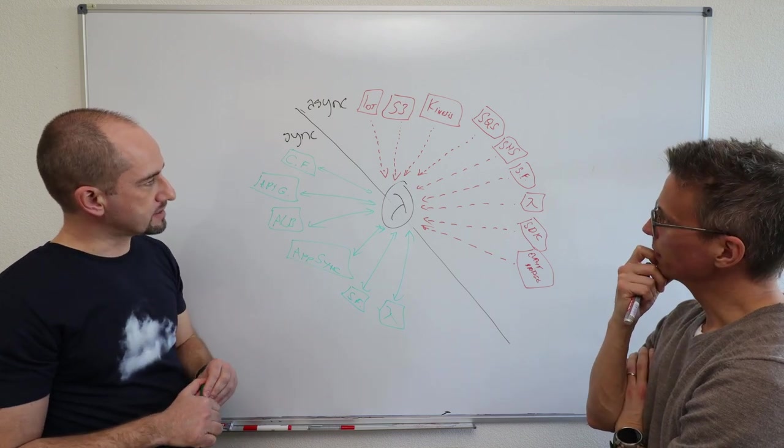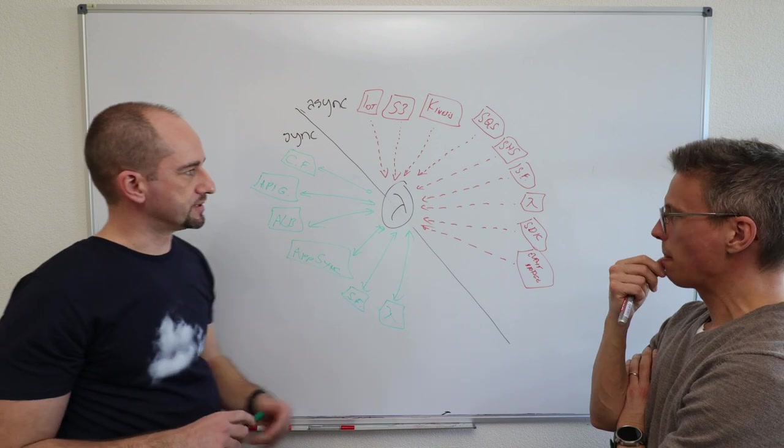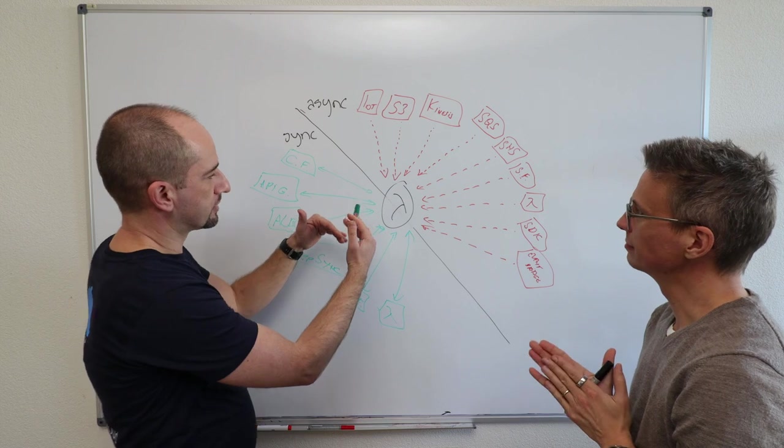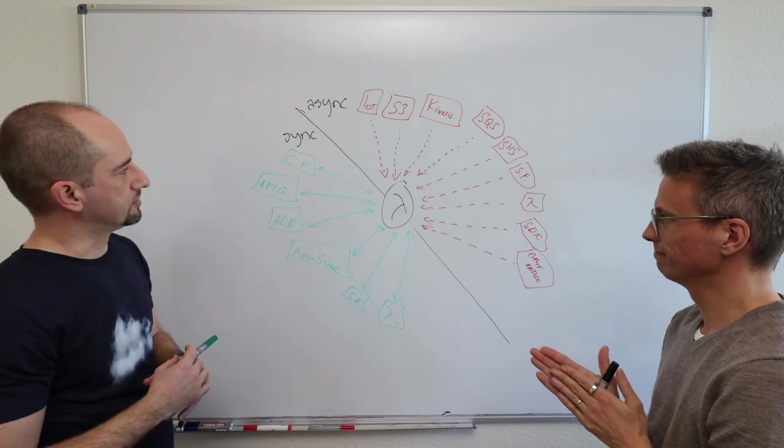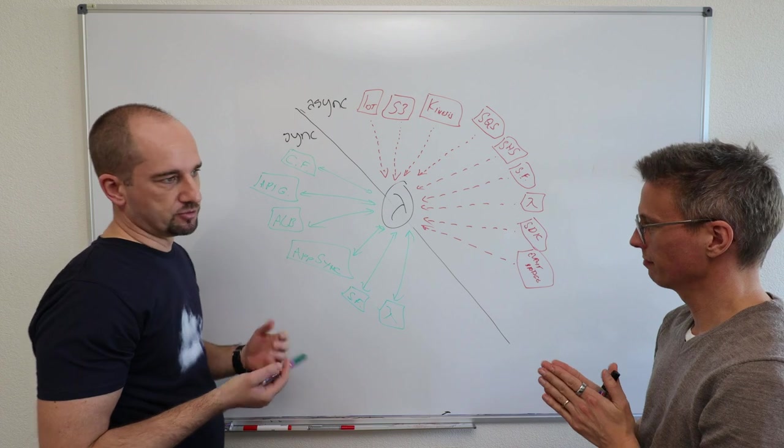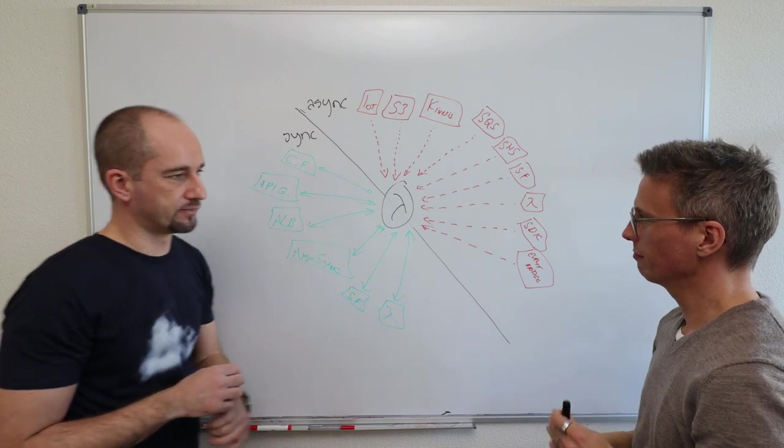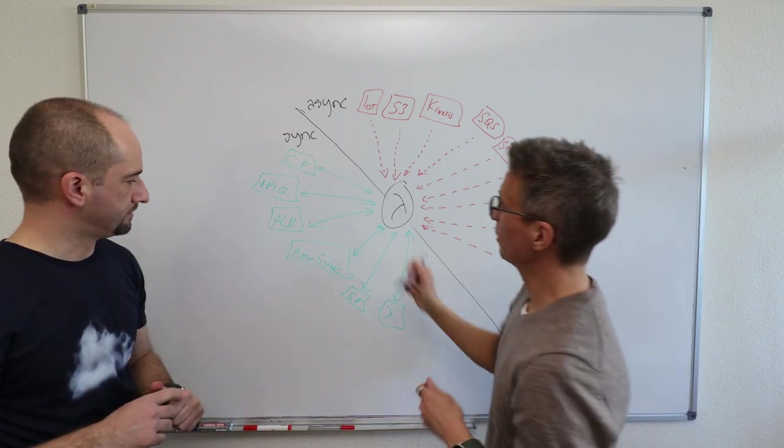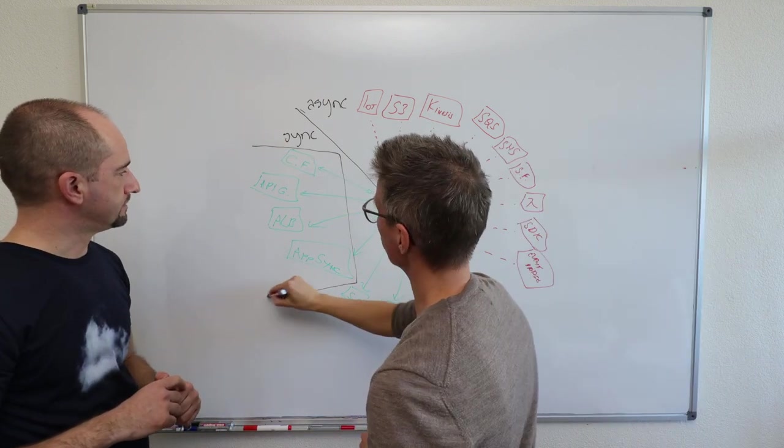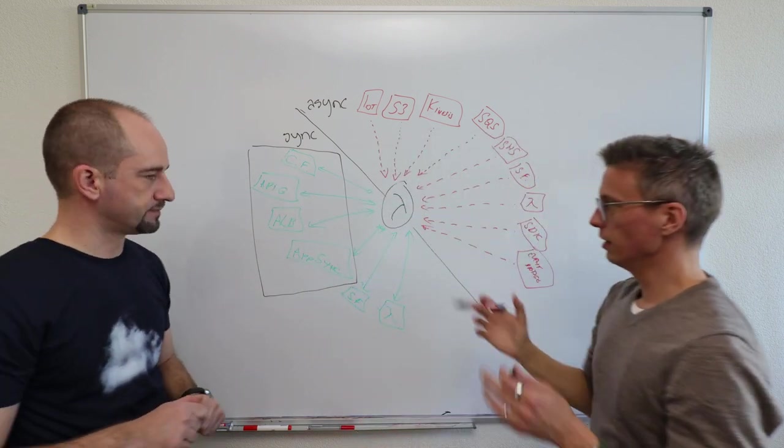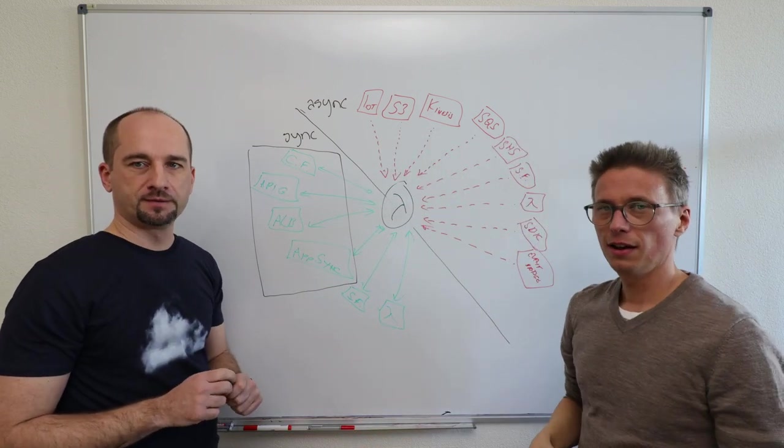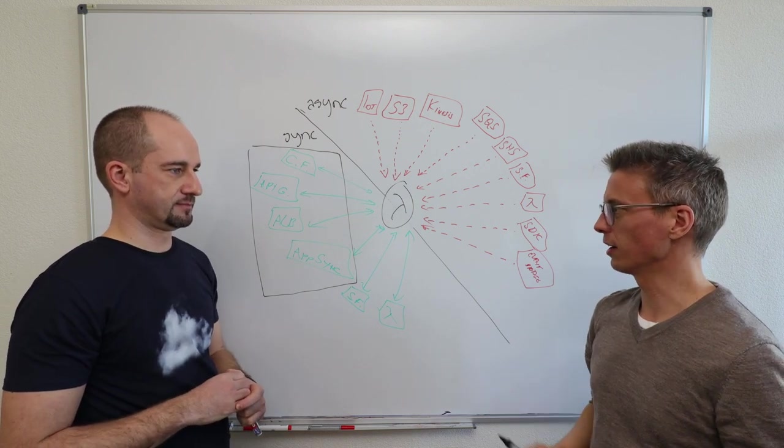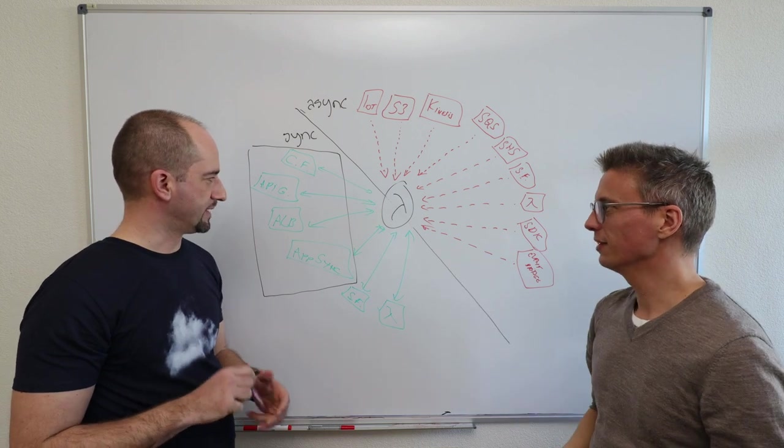So I think that's it. Maybe we have missed one or two of these services that also integrate with Lambda, but I think the point is to show that there are two ways to invoke and which services are mostly used in async and sync way of integrating with Lambdas. And like we said, these four ones here, we're going to now in the next episode, take a look at it in more detail. How do you build APIs for your web, for your mobile applications in a modern and interesting way? Powered by Lambda. Yeah, let's do that.